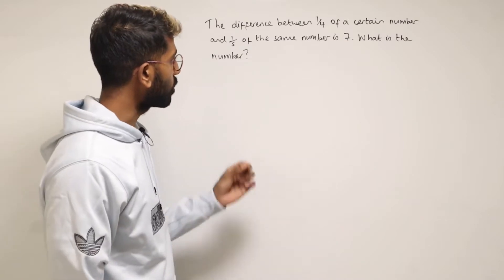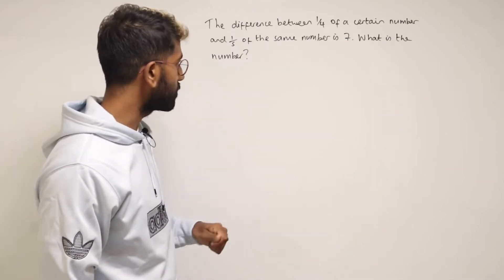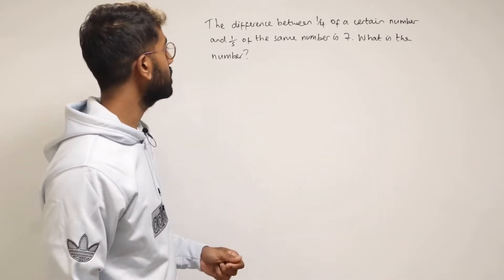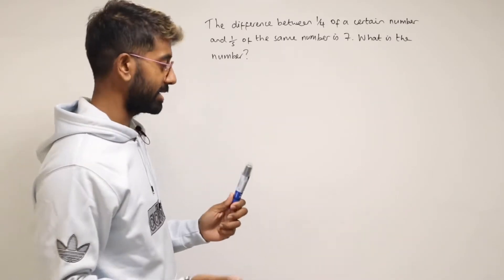The difference between a quarter of a certain number and a fifth of the same number is seven, and we've got to find out what the number actually is.